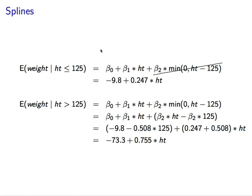So, interpreting this, these equations, the expected weight given that height is less than or equal to 125 centimeters is represented on this first one. So, again, because height or this spline term is going to be 0 for all of the values in this equation, this beta 2 term is going to cancel out, and we get negative 9.8 plus 0.247 times height.